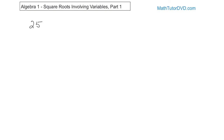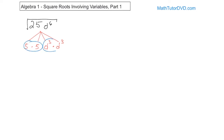Next: √(25d⁶). You do the same thing — write a tree. 25 is easily written as 5 times 5. Then ask yourself, what is d to the 6th? You could write it as d times d times d times d times d times d and circle pairs, which is fine. But d⁶ can also be written as d³ times d³, which is already a pair. When you multiply those you add exponents to get d⁶. So the fives become a pair and the d-cubes become a pair. Pull out a single 5 and a single d³: the answer is 5d³.